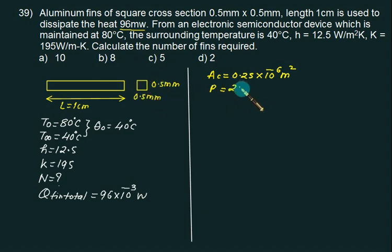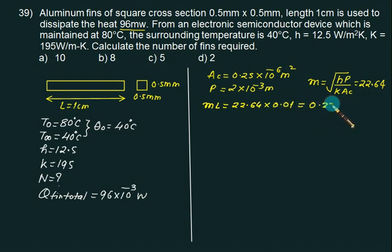This data is sufficient to calculate value of M. We have M equals to under root HP by KAC. Substitute all values and check. This answer is 22.64. Now we'll confirm for the short and long fin. For this we'll calculate ML which is 22.64 multiplied by 0.01 which is 0.2264, which is less than our standard value of 3.